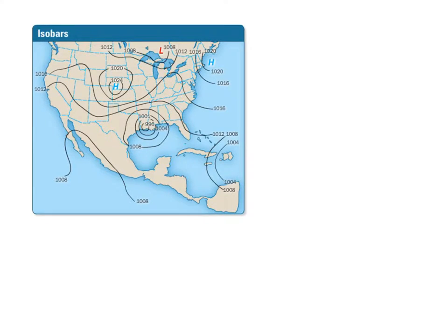On our weather maps we have lines which we call isobars. Remember 'iso' means same, and 'bar' refers to the millibar — how we measure pressure — so each of these lines is a pressure line showing us what the air pressure is and where it is. Here we have a high pressure system represented by an H, and we'll have a low pressure system as well. We'll talk more about these pressure systems and how they affect weather shortly.